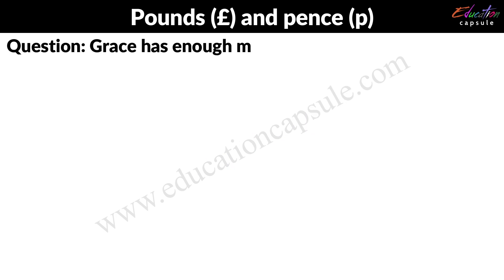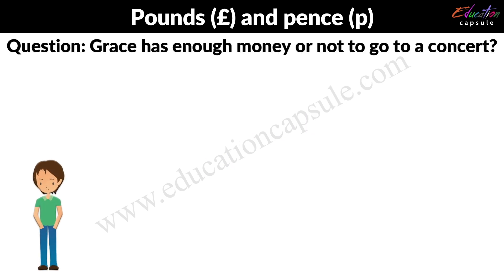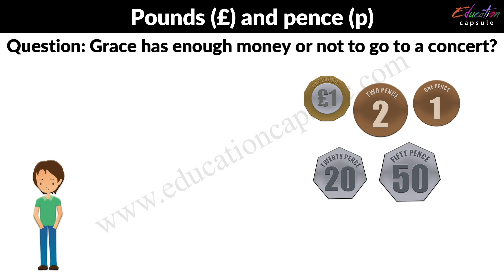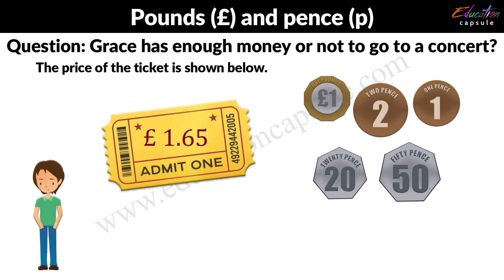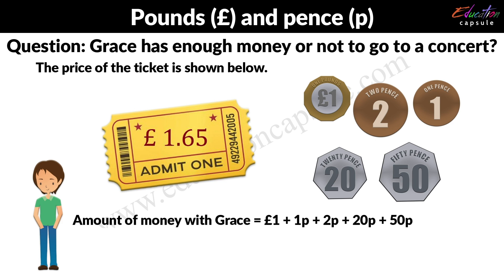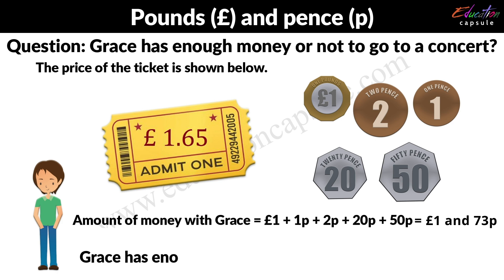Let's try another question. Grace has enough money or not to go to a concert. The price of the ticket is shown below. The amount of money with Grace is equal to 1 pound plus 1 pence plus 2 pence plus 20 pence plus 50 pence, which makes it equal to 1 pound and 73 pence. The amount of the ticket is 1 pound and 65 pence. So we can say that Grace has enough money to buy a concert ticket.